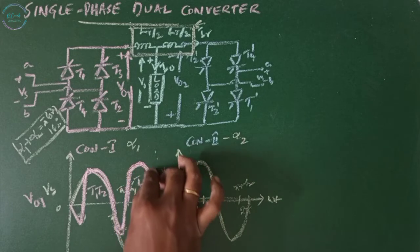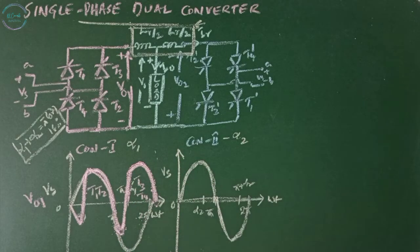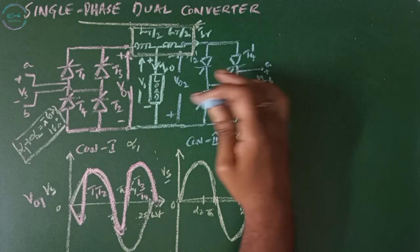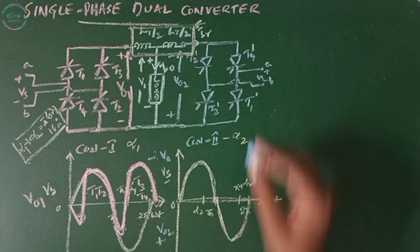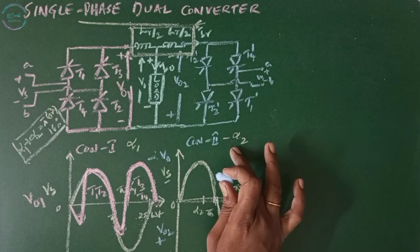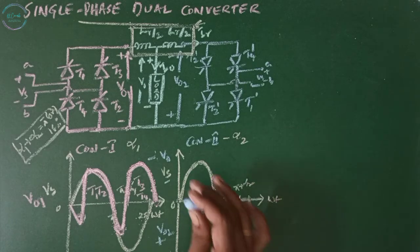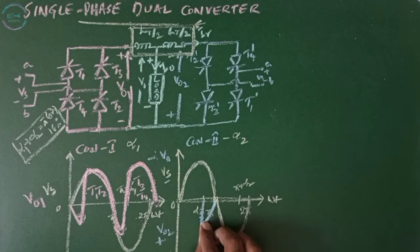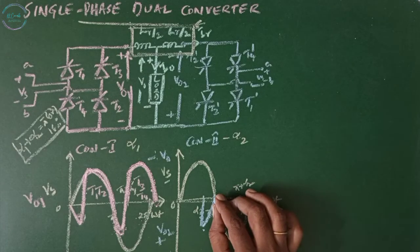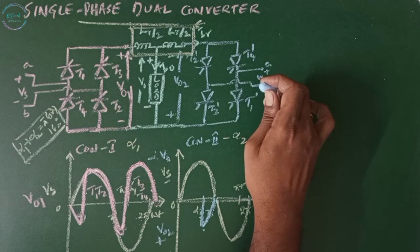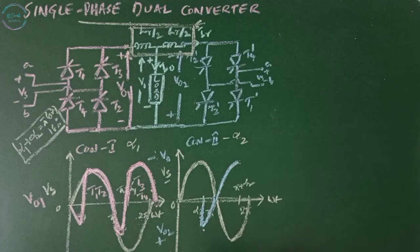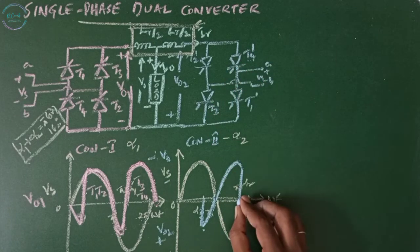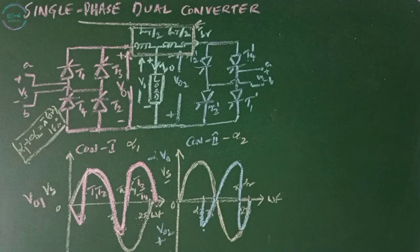For converter two operation: the input signal is given between A and B where A is positive and B is negative, but the load voltage polarity is reversed. So V0 two positive is taken below and V0 two negative above. Thyristors T1' and T2' are triggered in the positive half cycle at firing angle alpha two, and the voltage appears across the load in the positive half cycle. When it reaches pi, the voltage reverses and continues in the negative direction. When T3' and T4' are turned on, the input appears across the thyristors in the positive half cycle. This is the output of converter two.